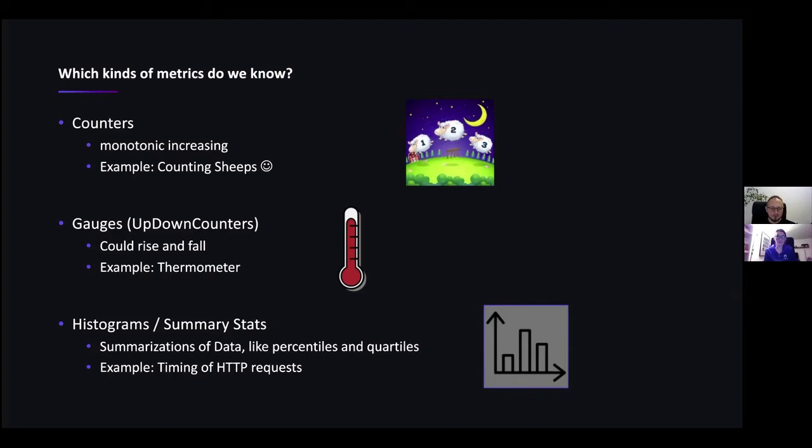If you want to collect values for each request to your web server, you have to deal with data where single values may not give you the information you want. As you are dealing with a high volume of metrics, you want to aggregate them — for instance, the number of requests, the average duration of a request, and the fastest and slowest responses. These are things which can be achieved using histograms and summary statistics.